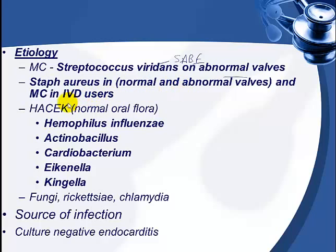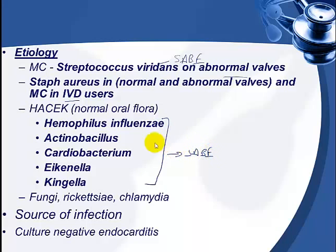Another category is HACEK — an acronym for five bacteria that are normal oral flora with low virulence, causing subacute bacterial endocarditis rather than acute. These include Haemophilus influenzae, Eikenella, Cardiobacterium, Eikenella corrodens, and Kingella. Fungi, Rickettsia, Q fever, Chlamydia, gram-negative infections, and Enterococci can also lead to infective endocarditis.